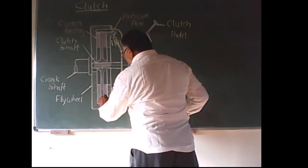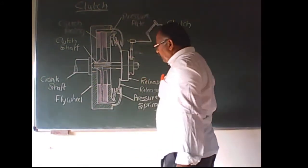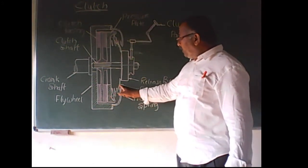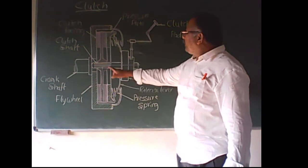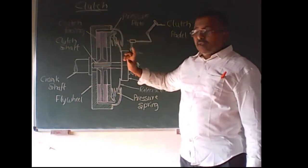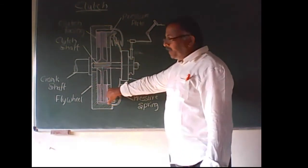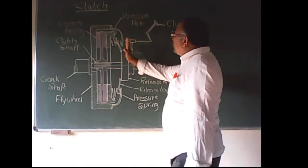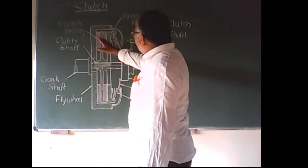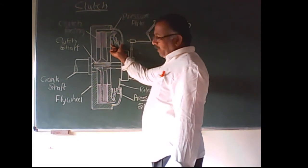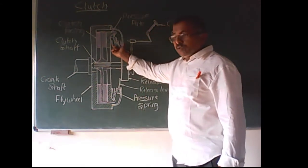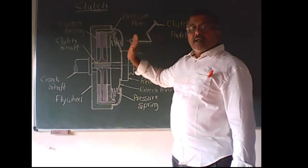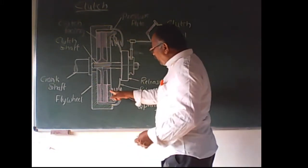The pressure plate assembly consists of the pressure plate, release lever, pressure spring, and cover. The pressure plate is under the continuous pressure of the spring. The spring continuously keeps the pressure over this plate, and that is why that plate is known as the pressure plate.